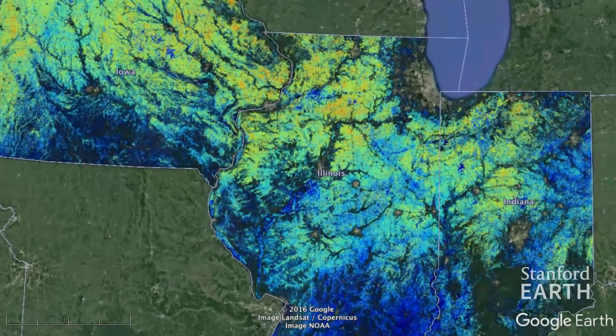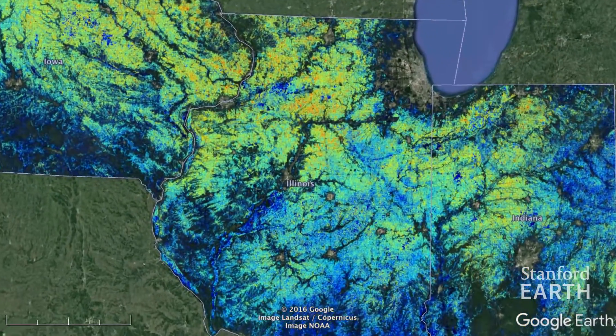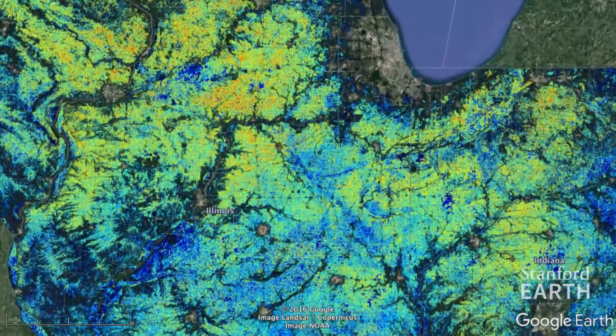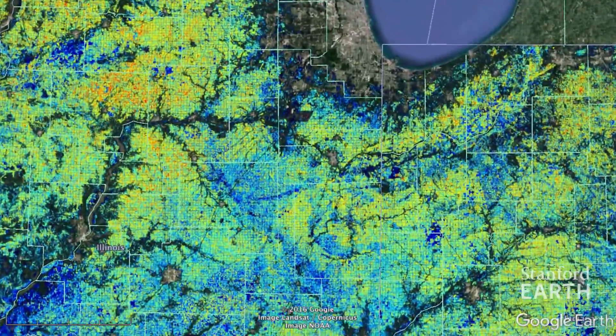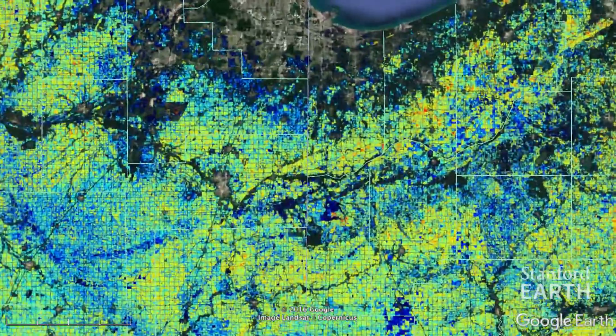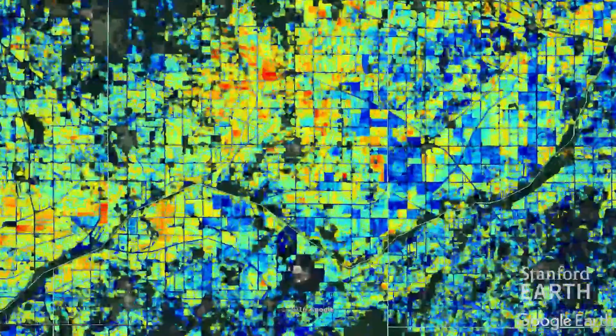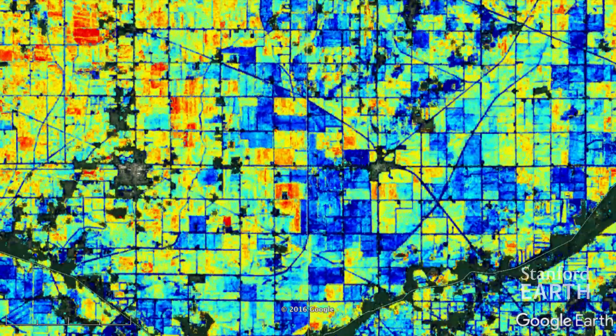So, we mapped corn and soybean yields for every field in the Corn Belt since the year 2000. The approach uses public satellite and weather data and allowed us to zoom in to an unprecedented amount of detail.